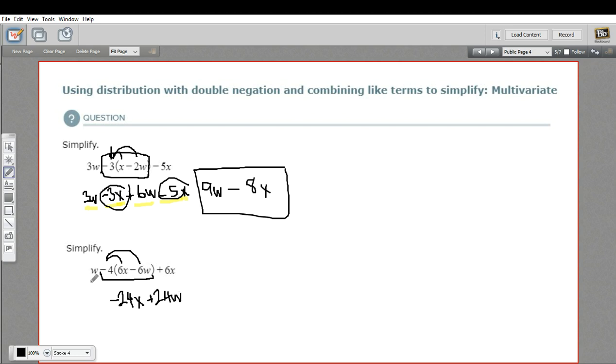Okay, so we've done what's in the middle. Let's put the rest of our problem here. We've got this w there, and we've got a plus 6x. And now, let's find our like terms.